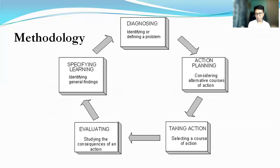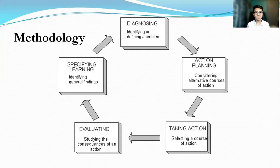The methodology of action research: first, you diagnose the problem — identify or define it. Then do your action planning, considering alternative courses of action. After that, you take action and select a course of action to use. Once done, you evaluate by studying the consequences of that action. Finally, you identify your general findings. From your general findings, you diagnose if there is still a problem and then repeat the whole process again.